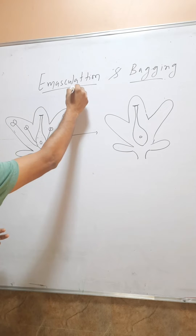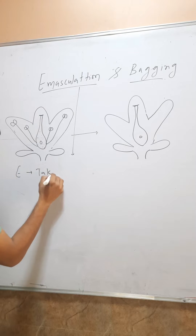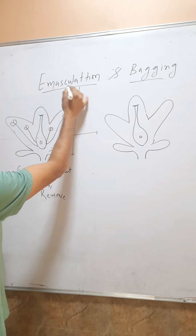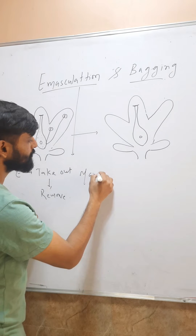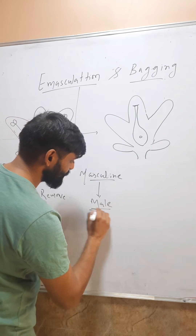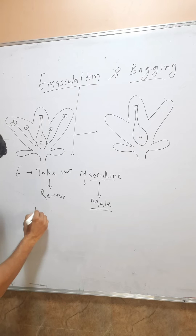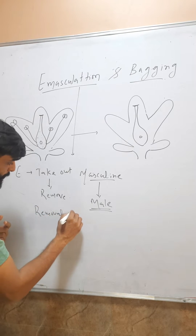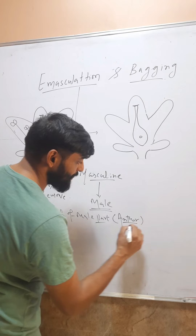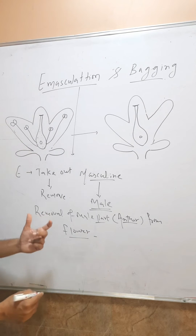So what is emasculation and bagging? First of all, let's talk about the word emasculation. 'E' here means to take out, or you can say remove. The word 'masculation' is taken from masculine, which means male. So removal of the male part — that is, the anther in case of a flower — from the flower is called emasculation.